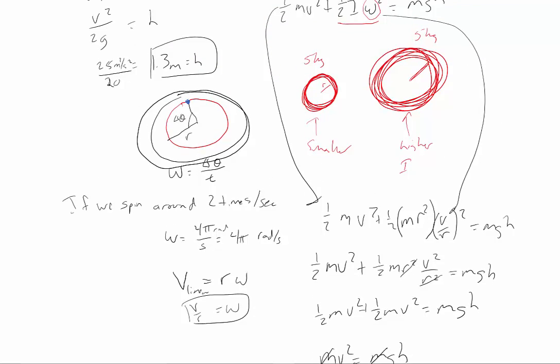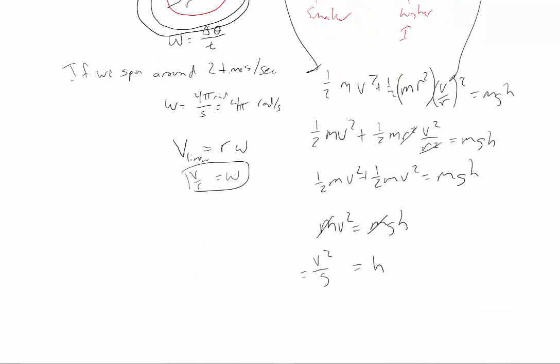Which again, if we said that the hoop was going five meters per second, we get 25 meters squared per second squared, when I square it, divided by 10 meters per second squared, where the height that this is going to get to, is 2.5 meters.